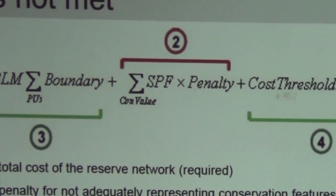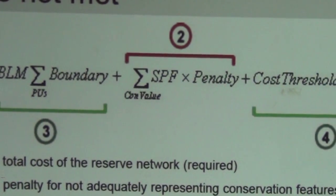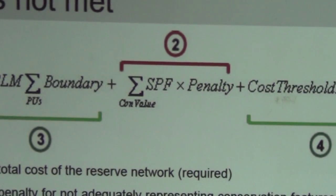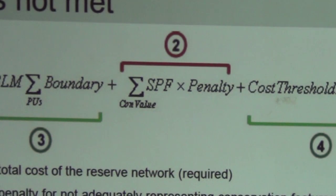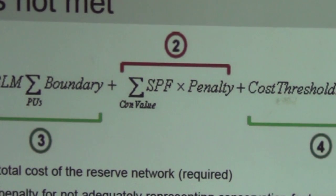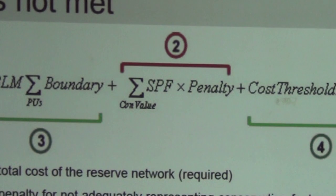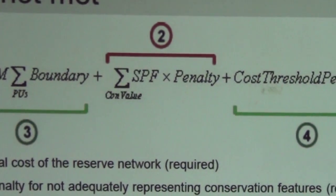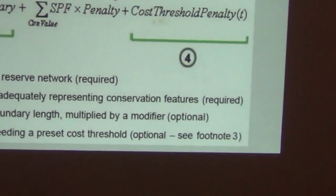A student asks whether the software brings an output. The instructor confirms yes, and acknowledges that a screenshot of the actual software would have been more informative than explaining the nuts and bolts of the algorithm. There is free software you download, you input data, and you get the prioritization solution out — you don't do the calculations manually.